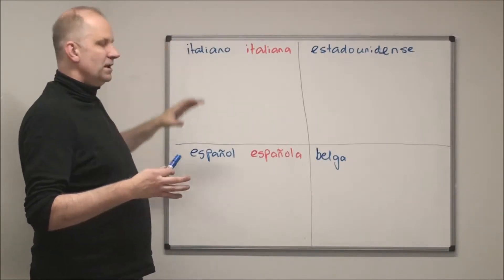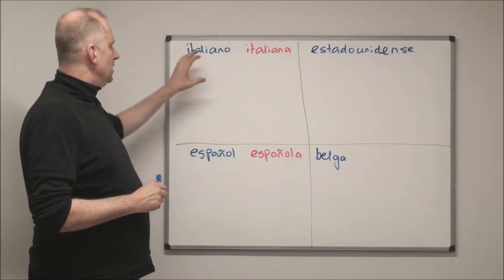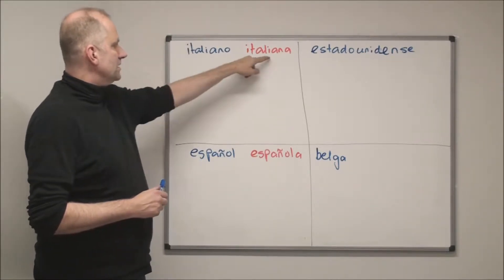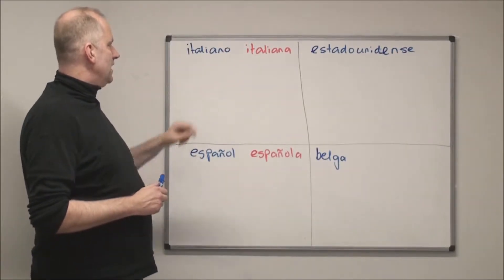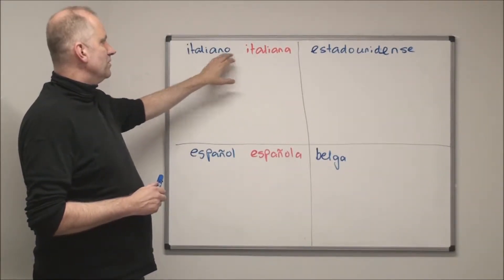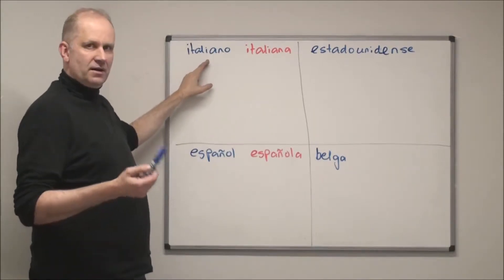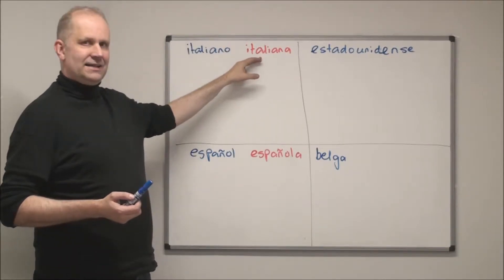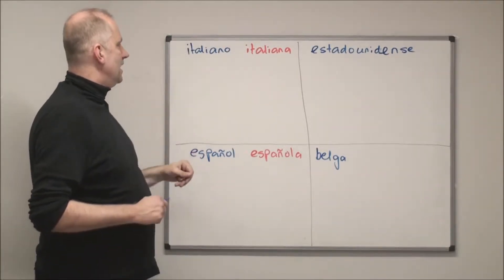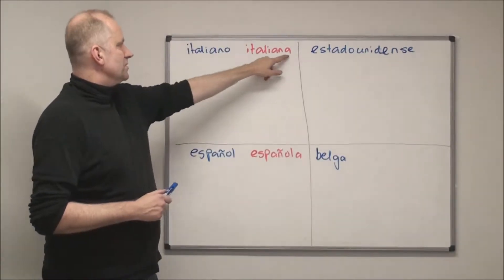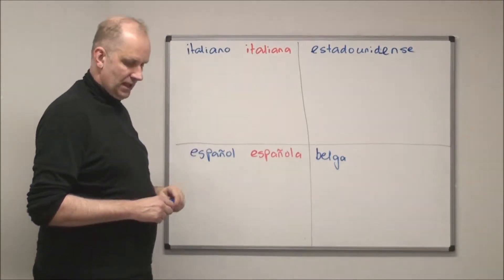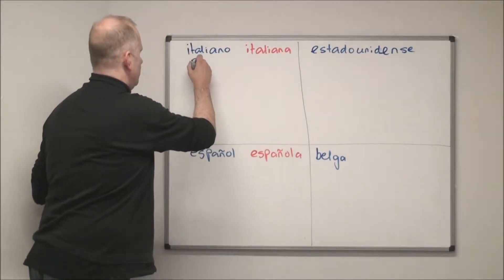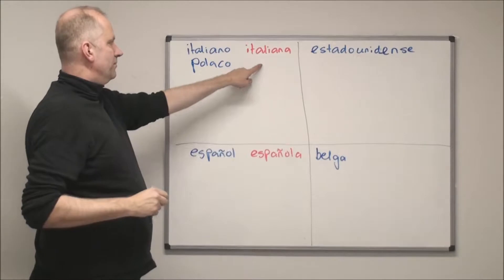The adjective in the masculine is shown in blue and the feminine in red. So if you talk about an Italian man it would be 'italiano', and for an Italian woman 'italiana'. When the adjective ends with an -o in the masculine, the -o just changes to -a.